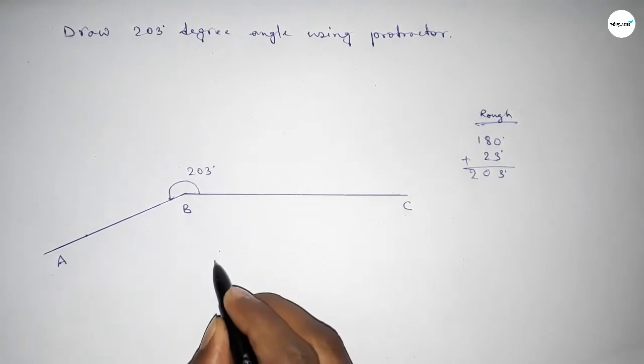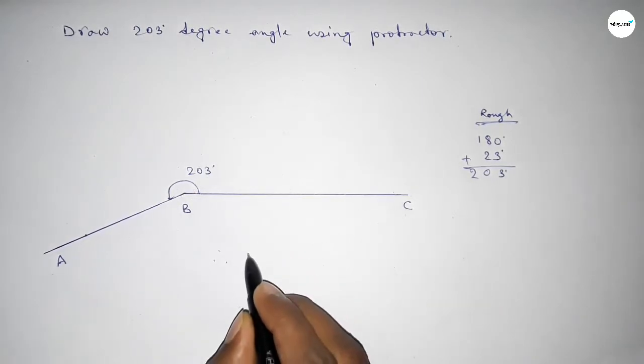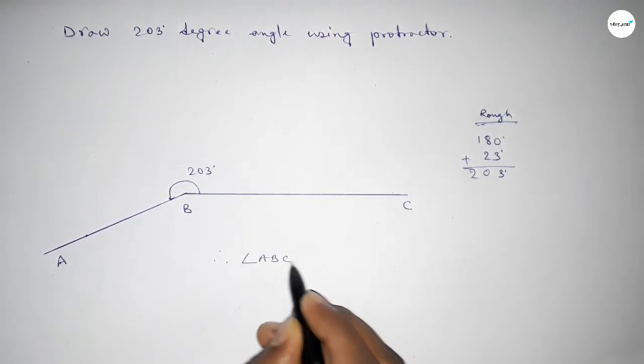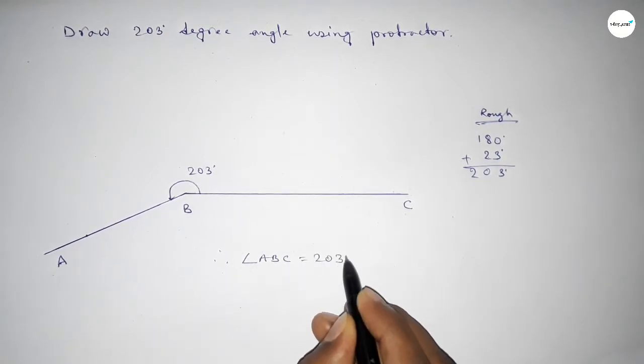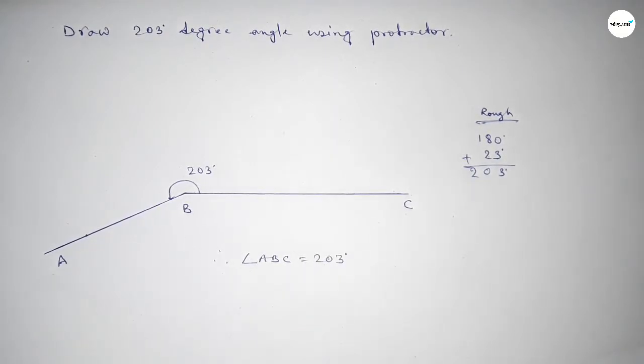Therefore angle ABC equal to 203 degree angle. That's all, thanks for watching. If this video is helpful to you, then please share it.